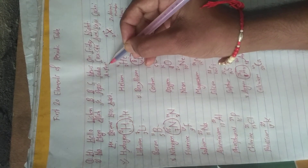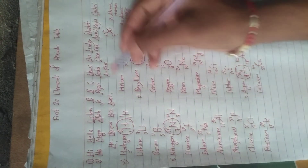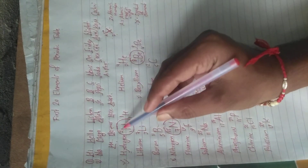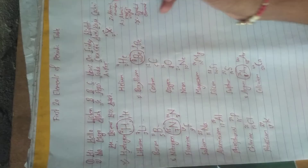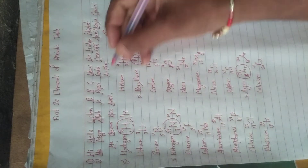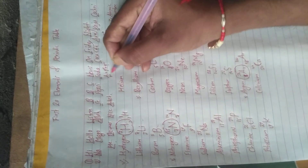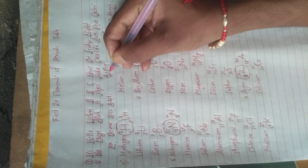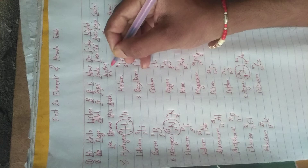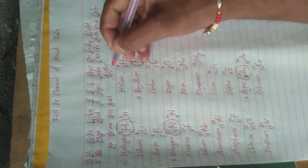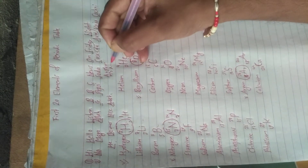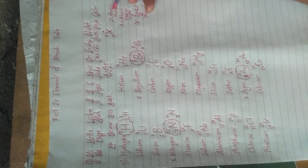Now it is very easy to get the neutron number. We simply subtract the atomic number from the atomic mass. So: number of neutrons = A minus Z, that is atomic mass minus atomic number.